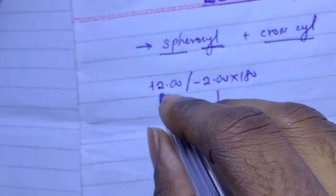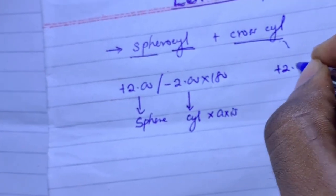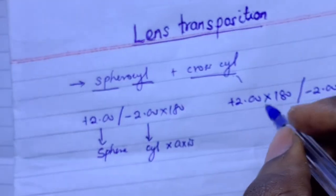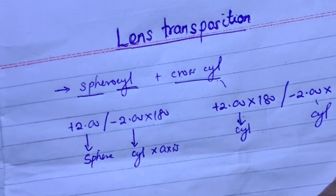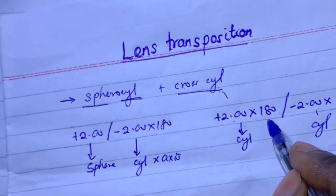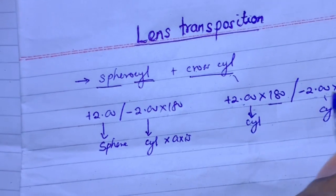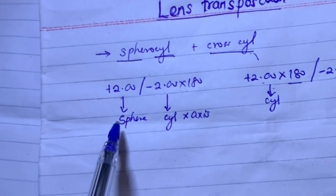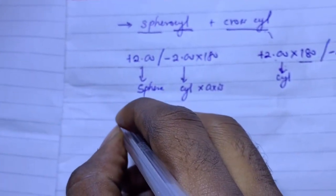When I say a cross, I mean two cylinders combined. An example is plus two axis 180 combined with minus two axis 90. Here I have a cylinder and another cylinder — two cylinders crossing — so this is called a cross cylinder. A power with an axis is a cylinder, so two cylinders make a cross. In lens transposition, we will be changing from sphero-cylinder to cross cylinder and vice versa.